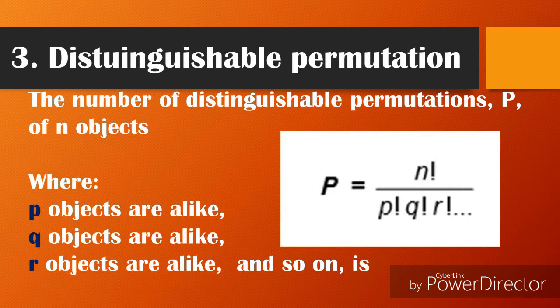Number three: Distinguishable permutation. The number of distinguishable permutations P of n objects is given by the formula P = n! / (p! × q! × r! × ...), where p objects are alike, q objects are alike, r objects are alike, and so on.